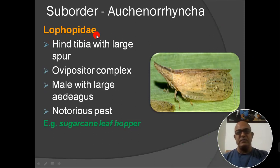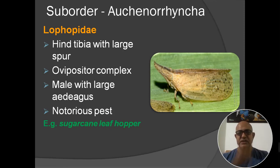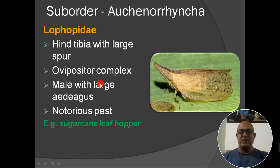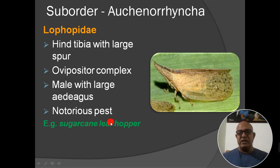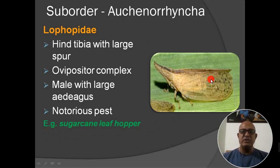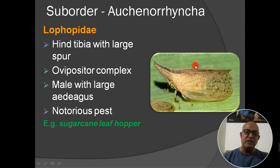Next family: Lophopidae. Hind tibia has a large spur. Ovipositor is complex — the external genitalia of females are elaborate in structure. Males have a large aedeagus. They are notorious pests, infecting crops in large numbers. The example is also the sugarcane leaf hopper — this insect destroys sugarcane crops.